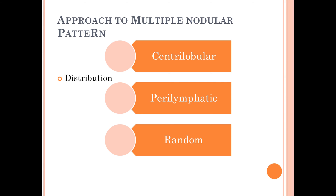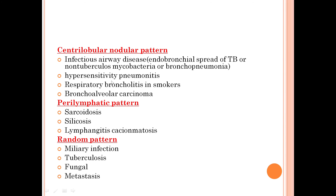Now, what is the approach if you see a multiple nodular pattern in the lung fields? We assess the distribution: centrilobular, perilymphatic, or random. If the nodules are in a centrilobular pattern, the first entity that comes to mind is infectious airway disease, endobronchial spread of tuberculosis or non-tuberculous mycobacteria, or bronchopneumonia. Hypersensitivity pneumonitis, respiratory bronchiolitis in smokers, and bronchioloalveolar carcinoma can also present with centrilobular nodules.